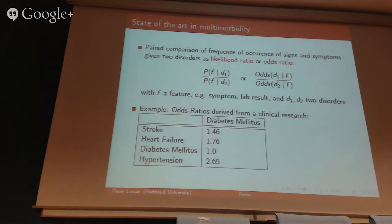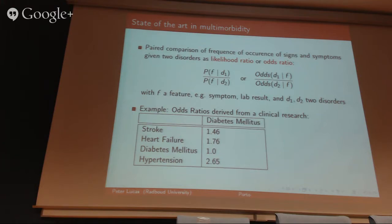The approach does not really let you understand the nature of the interaction — it only tells you whether there is an interaction or nothing. For instance, if this odds ratio is bigger than one, there is an interaction between diabetes mellitus and stroke, or hypertension. So quite a lot of interaction is present here. But it does not give you any understanding of the nature of the interaction between those diseases.